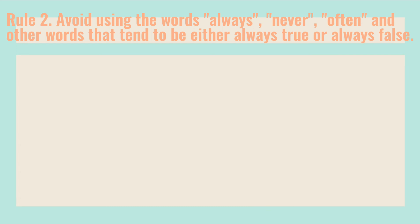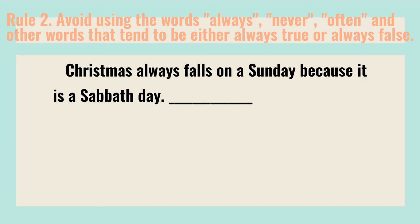Rule number two: avoid using the words always, never, often, and other words that tend to make statements either always true or always false. Example: 'Christmas always falls on a Sunday because it is a Sabbath day.' This statement uses the word 'always' and is almost always false. A test-wise student can easily guess through a test like this and get a high score even without knowing the subject matter.